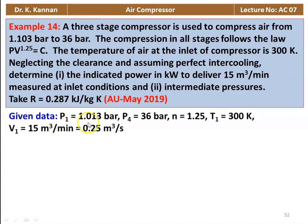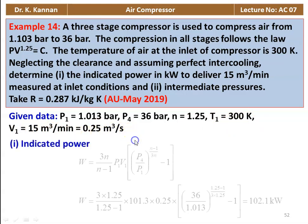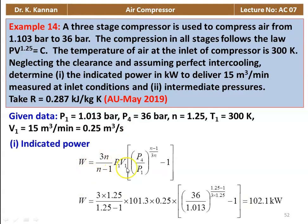Given: P1 = 1.013 bar, P4 = 36 bar (delivery pressure for three-stage compressor), n = 1.25, T1 = 300 K, V1 = 15 m³/min = 0.25 m³/s. Indicated power for three-stage compressor: W = 3 × [n/(n−1)] × P1V1 × [(P4/P1)^((n−1)/3n) − 1] = 3 × (1.25/0.25) × 101.3 × 0.25 × [(36/1.013)^(0.25/3.75) − 1] = 102.1 kilowatts.